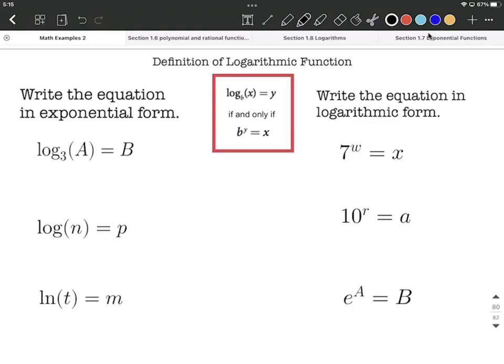First, let's start out with log base 3 of A equals B. To begin converting to exponential form, I identify what our base is. I read that off as log base 3 of A equals B, so I called 3 the base. We're going to begin with that.